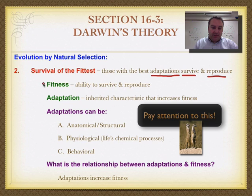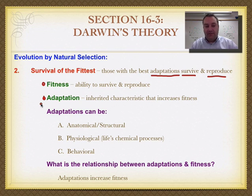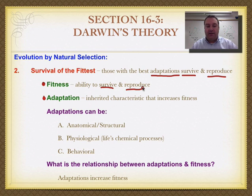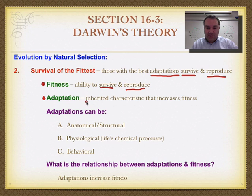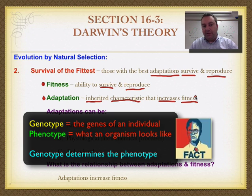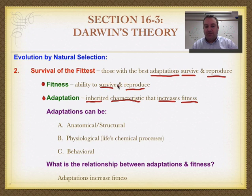There are two key vocabulary words you must master when it comes to understanding evolution. The first is fitness — fitness is the ability to survive and reproduce. You need to be able to pass your genes onto the next generation to truly be fit in a biological sense. An adaptation is an inherited characteristic — both a genotype and a phenotype — that increases fitness. In other words, you have something genetically that makes it easier for you to survive and reproduce.